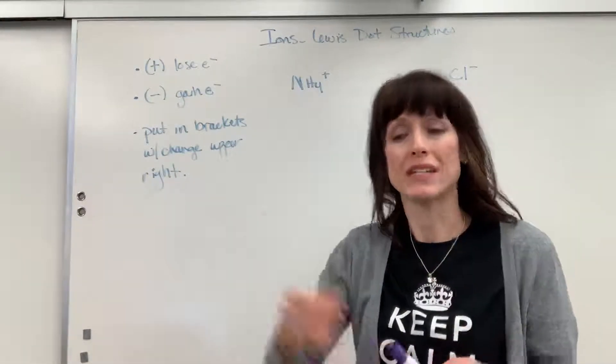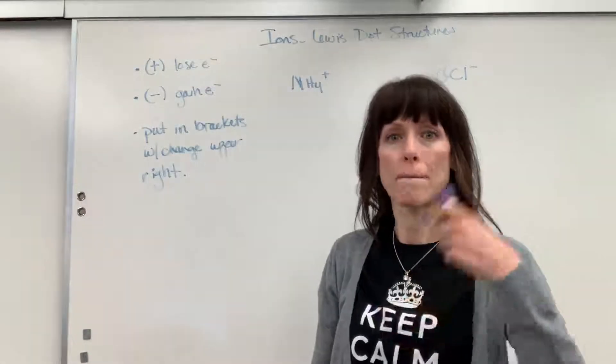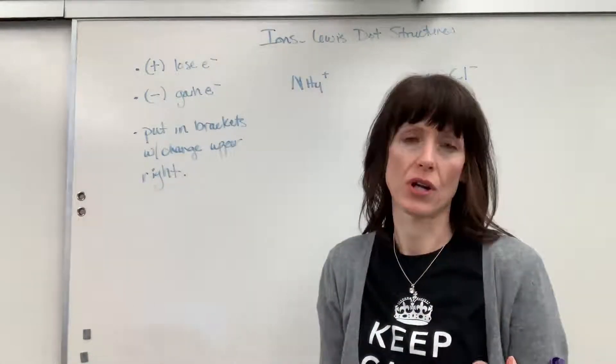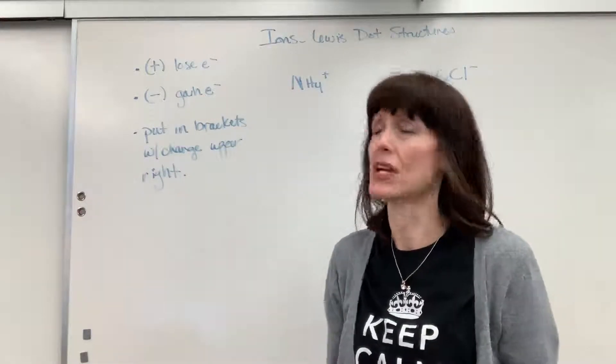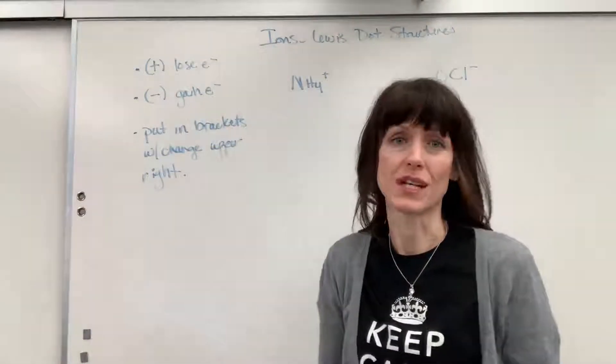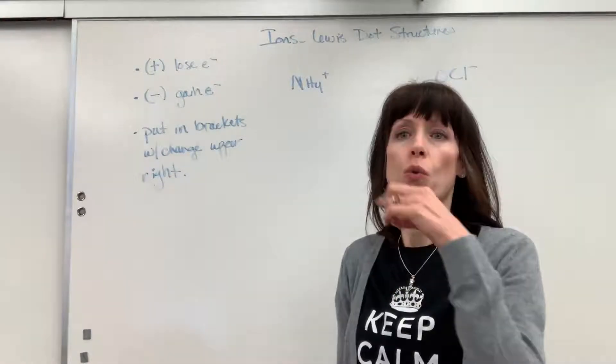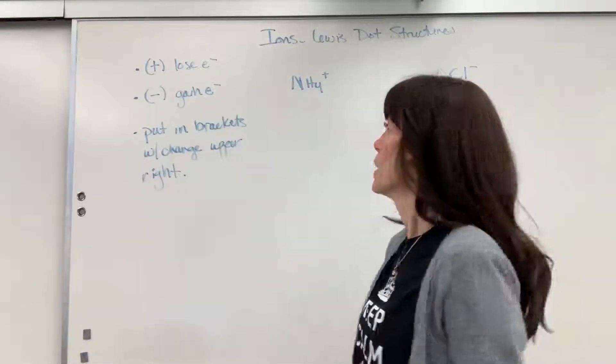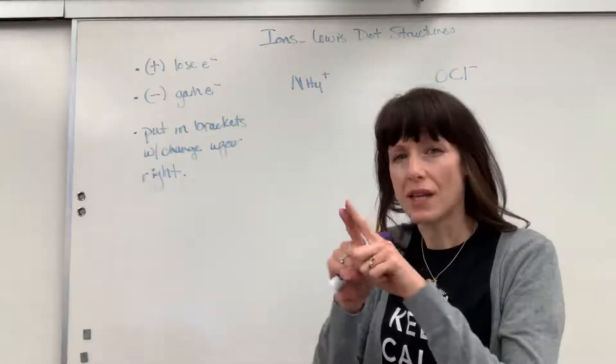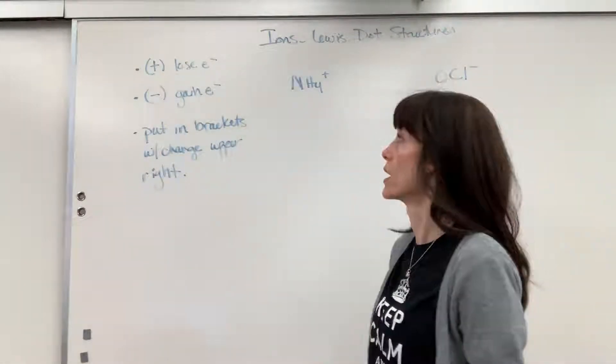Formal charge is just a way to actually write out our best guess of where the extra electron went. That doesn't usually at all change the Lewis dot structure itself. It just tells us which electron was the extra electron or where the electron was lost. So know that there's that connection, but you can watch the formal charge.